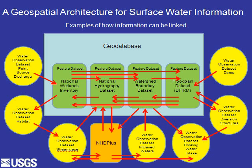For example, look at a point source discharge — where is that located? We know the address on the network, and we can link that to other datasets such as the National Wetlands Inventory and the National Hydrography Dataset. All this information can be related to each other using these network addresses to explicitly identify where things are in relation to each other — what's upstream, what's downstream, and how far away.